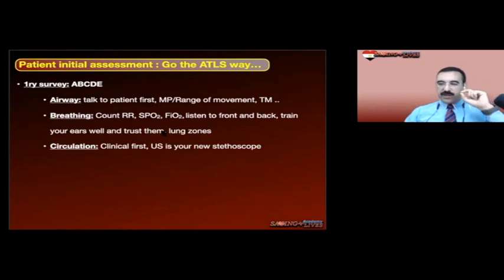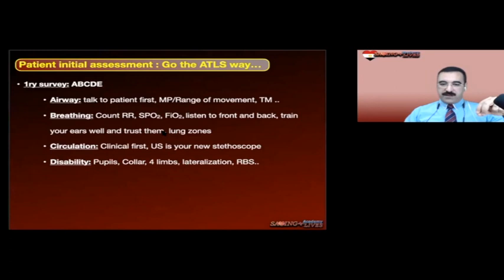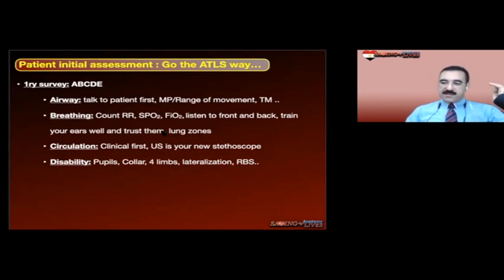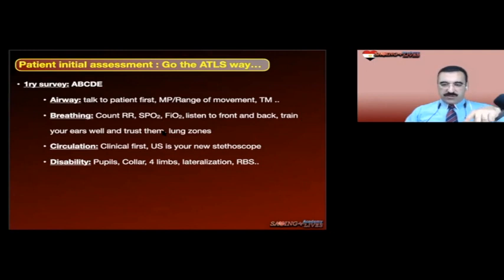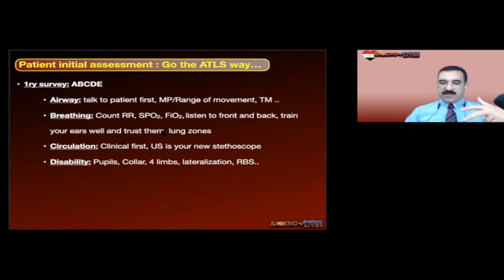Circulation: go clinical first. Don't jump to the ultrasound machine before you auscultate for murmurs, auscultate for crackles over the base of the lungs — then use your ultrasound as your modern stethoscope. Disability: look at pupillary reaction. If pupils are unequal, don't jump to a diagnosis — ask about any previous eye surgeries. If he had cataract surgery, LASIK, or any previous eye surgery, this really matters. Look if the patient is in a neck collar; if not and coming from an accident, put the neck collar immediately.